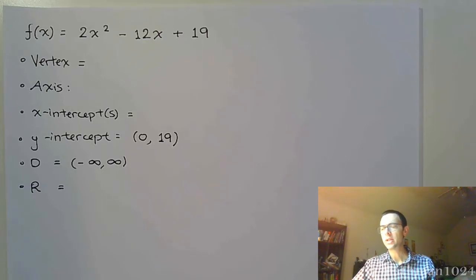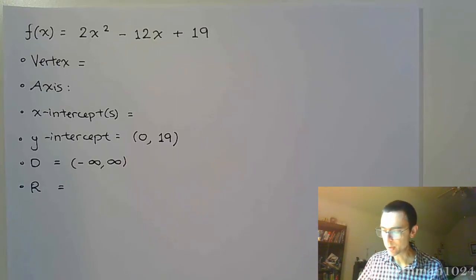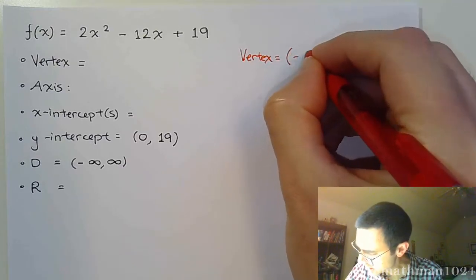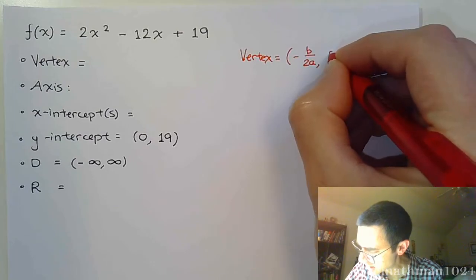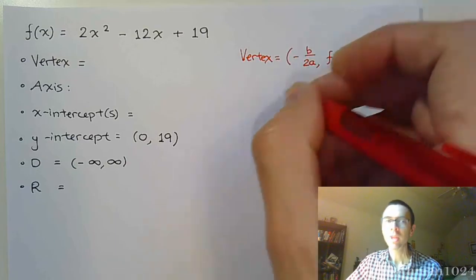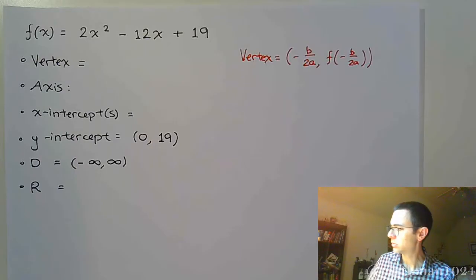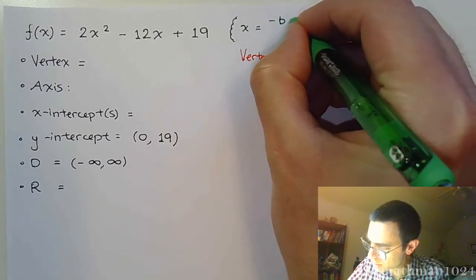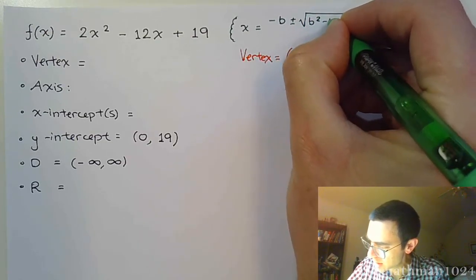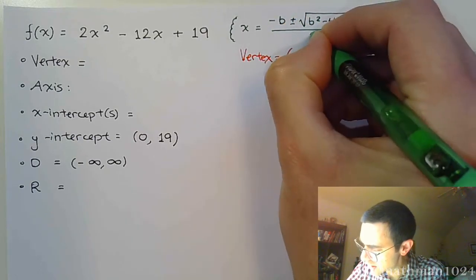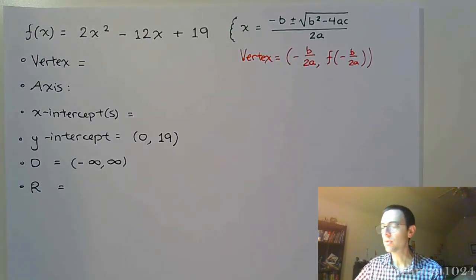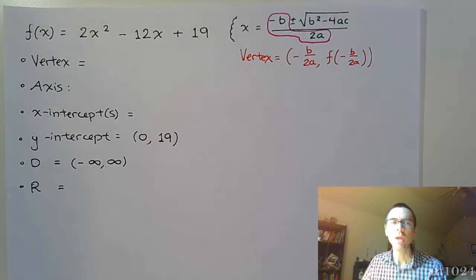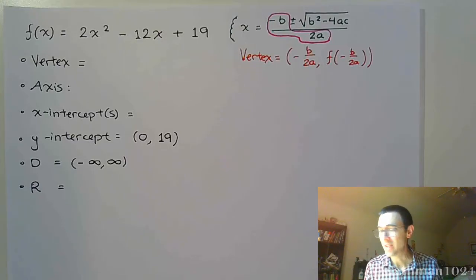Let's start with the vertex this time. Remember for the vertex, your vertex formula is negative b over 2a, comma, f of negative b over 2a. Now you may be wondering, where does the negative b over 2a come from? Well, here's a little thing that you might remember. It's the quadratic formula. The quadratic formula would say x equals negative b plus or minus the square root of b squared minus 4ac all over 2a. And that negative b over 2a is this guy right here. That's where the negative b over 2a comes from.